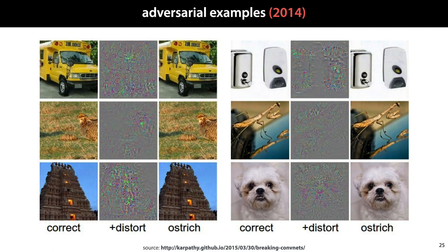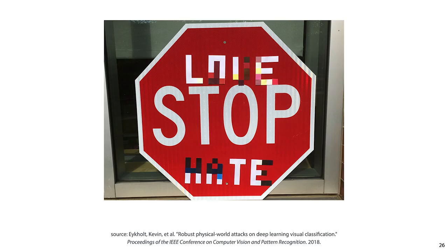The researchers also found that if they started the search not at a random image, but at an image of another class, all that was needed to change the class that the neural network saw was a very small distortion — so small that to us the image looks unchanged. In short, a tiny bit of distortion is enough to make a CNN think that a picture of a bus is a picture of an ostrich. Adversarial examples are an active area of research, both into how to generate them and into how to make models more robust against them. Even manipulating objects in the physical world can have this effect — a stop sign can be made to look like a different traffic sign by the simple addition of some stickers.